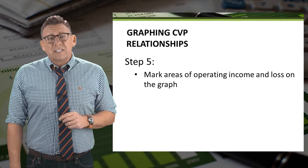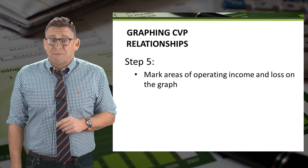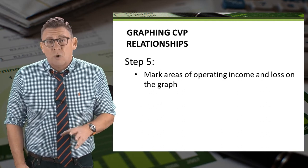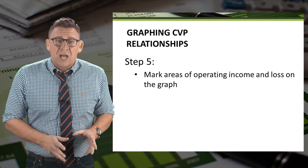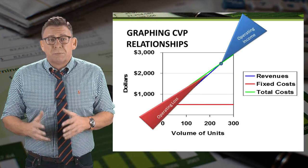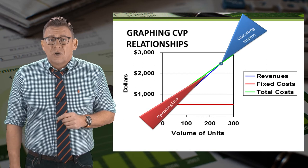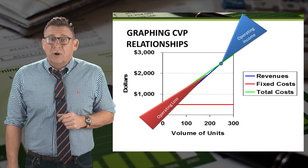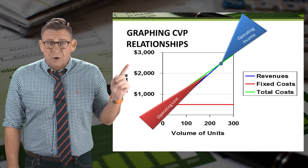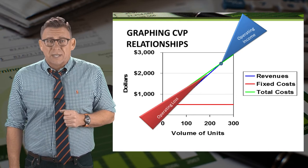The final step is to identify and mark the areas on the graph that show the operating income or operating loss. You can see that volume levels below the breakeven point result in operating loss, and volume levels above the breakeven point result in operating income.